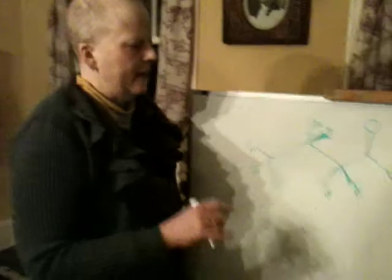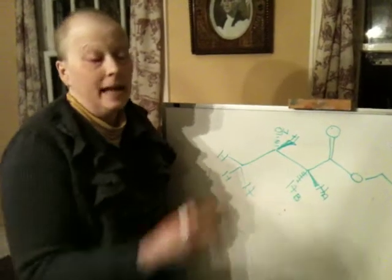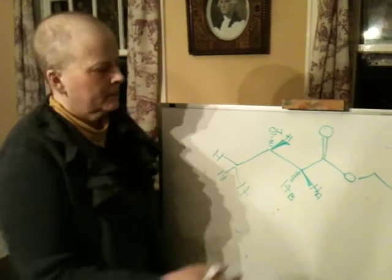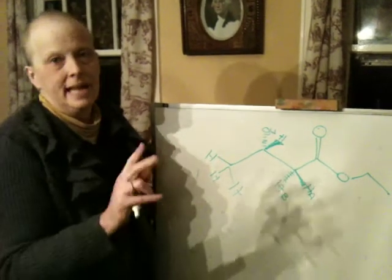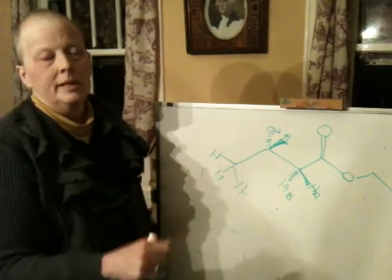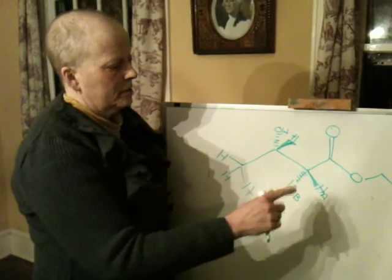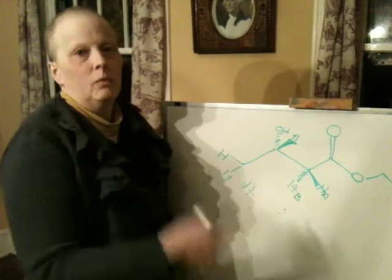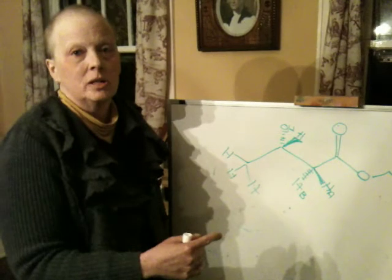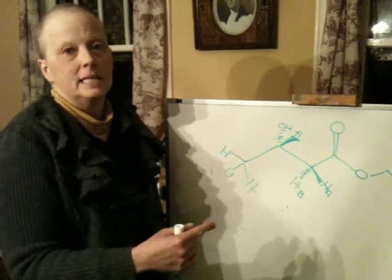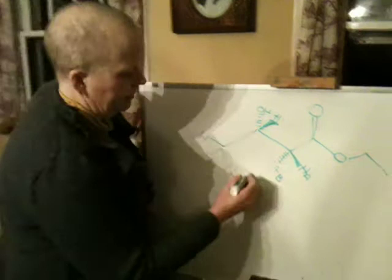If you have hydrogens that are on the same carbon, or any pair of hydrogens for that matter, and you replace them sequentially with a test group, and when you do that you end up with diastereomers, those hydrogens are called diastereotopic hydrogens. So let me write that down.